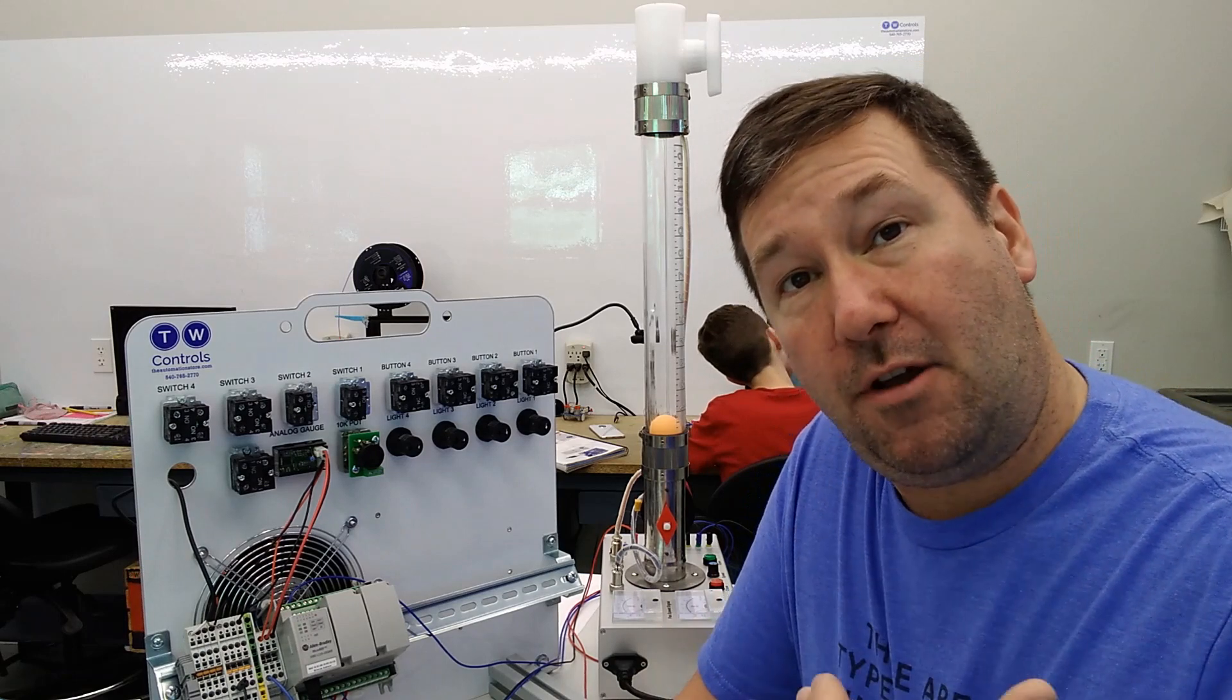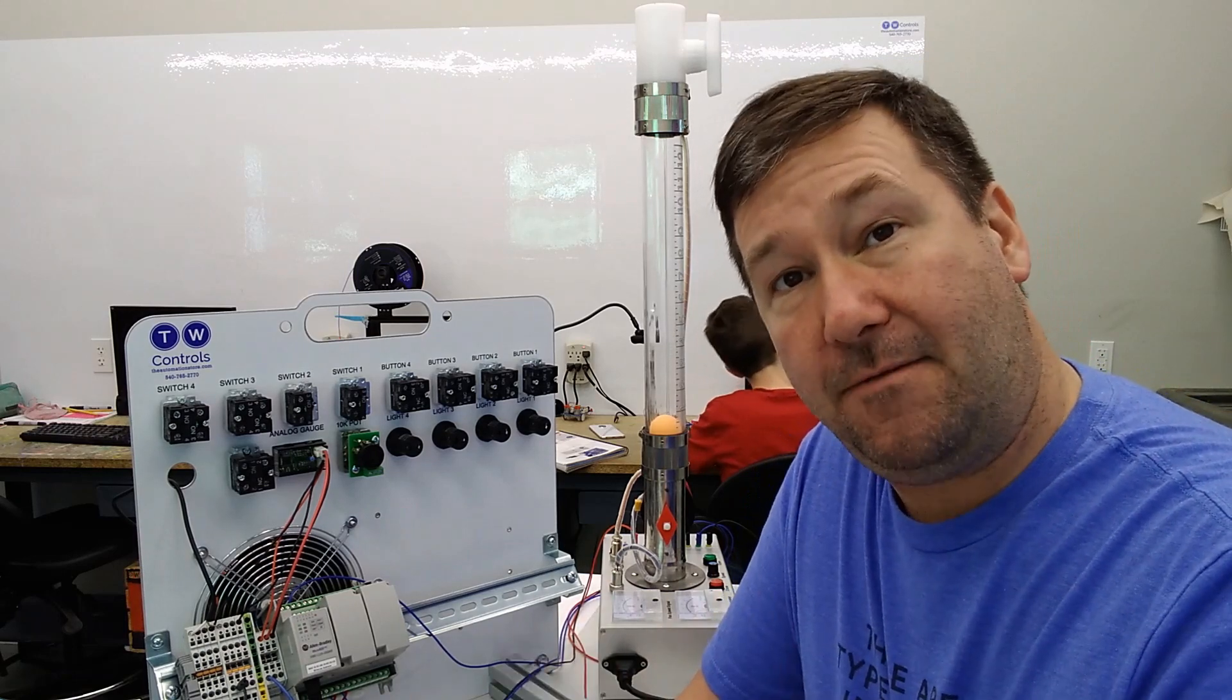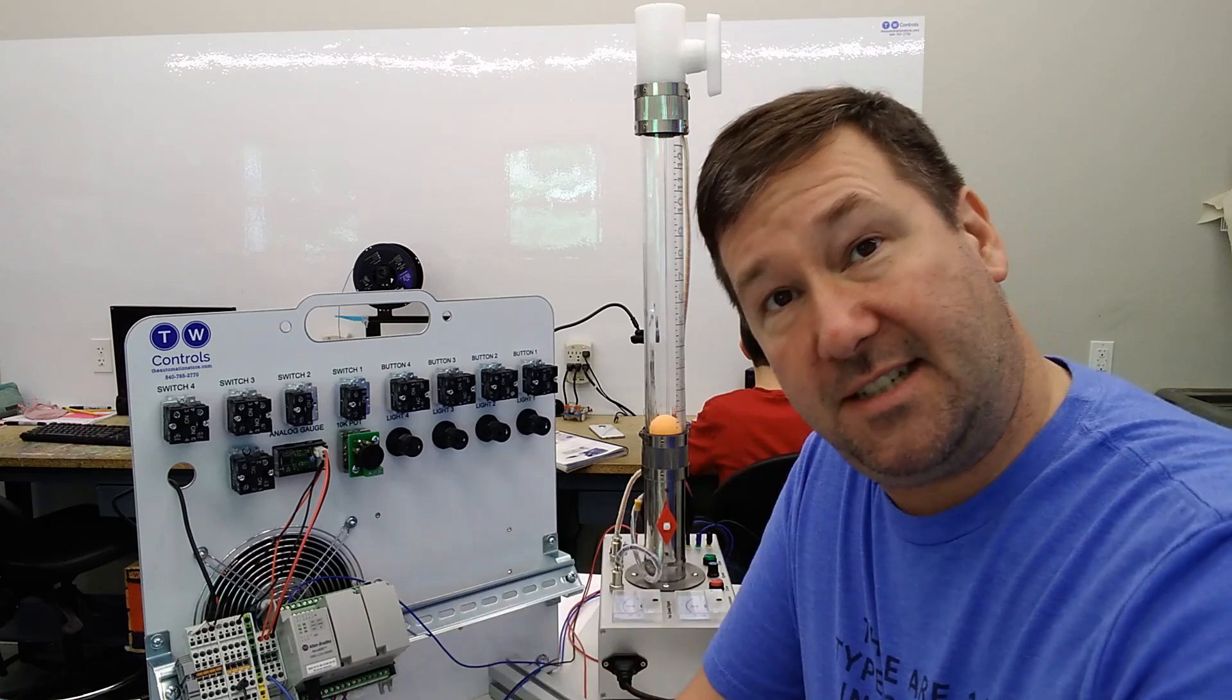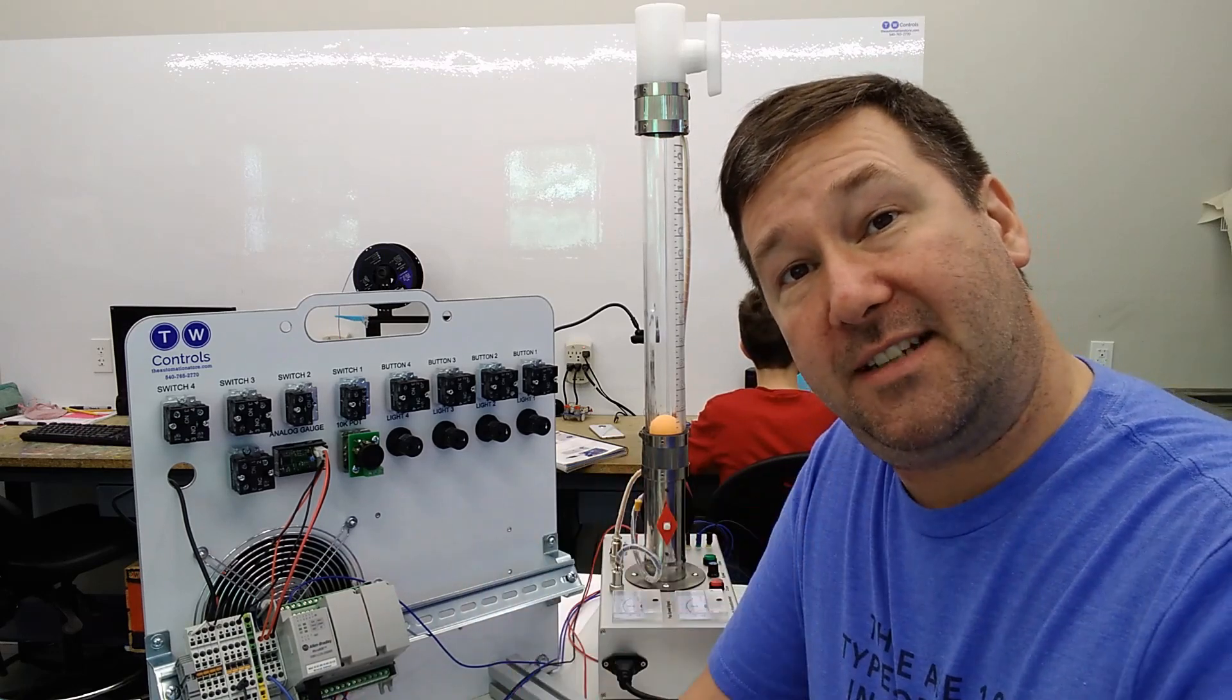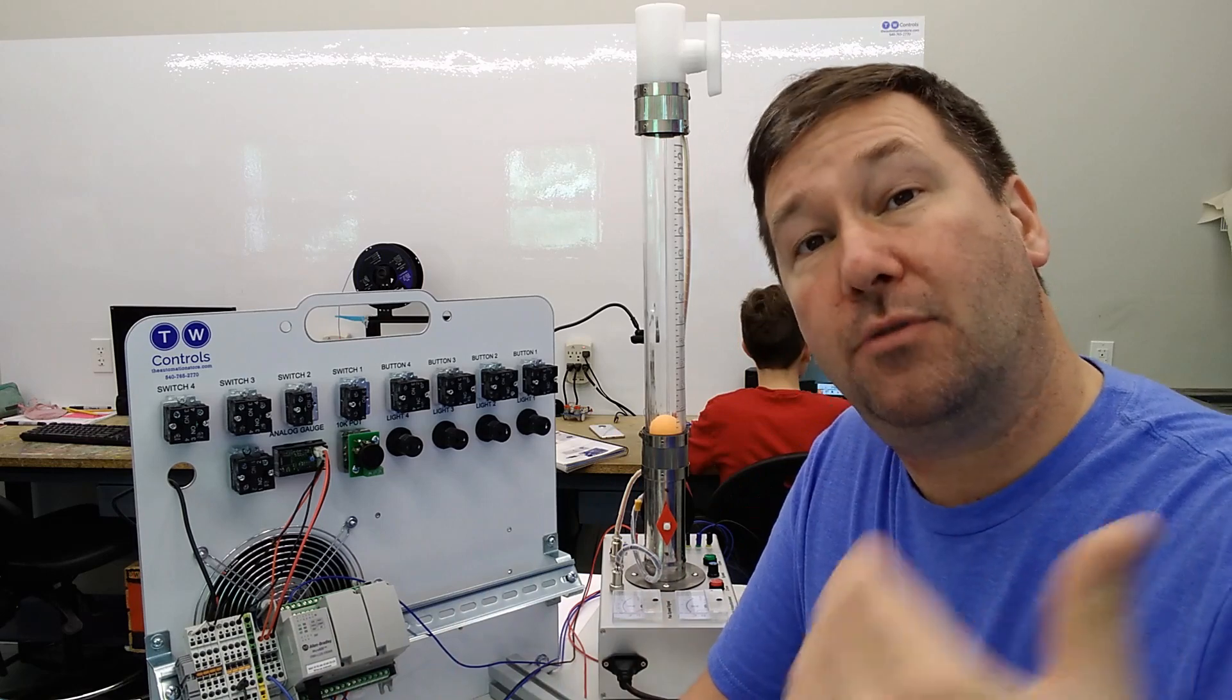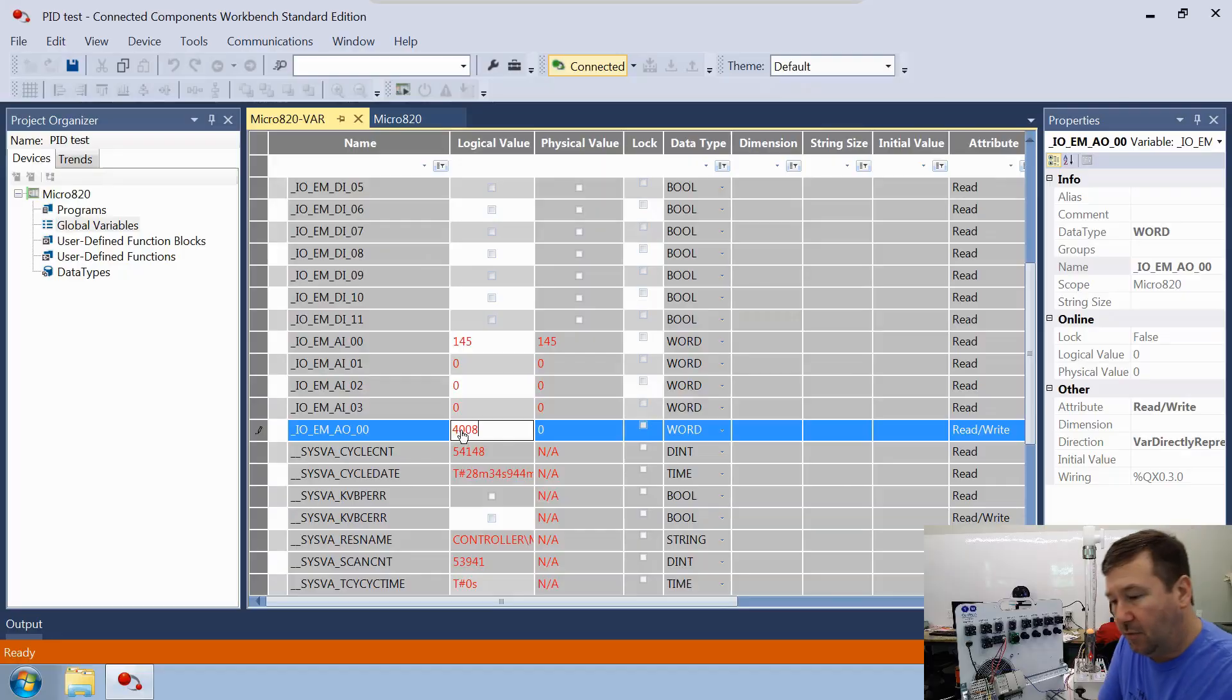Now a little about the scaling of the Micro 820 analog. The inputs are zero to 4,095 is going to equal zero to 10 volt. Your output zero to 4,008 is going to equal zero to 10 volt.